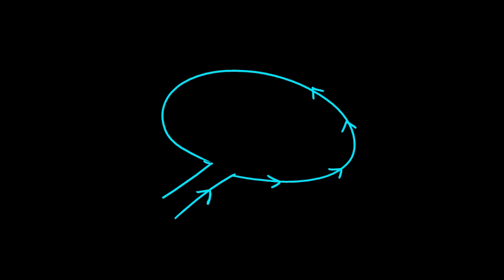Now it gets more interesting if we think about the magnetic field around a loop of wire. This is tricky to draw but let me give it a shot. Let's imagine a piece of wire that forms a loop, and imagine current flowing in this direction — so it flows around the wire like this. These little arrows represent the direction of the current flow, so it goes in the wire there and out the wire there.